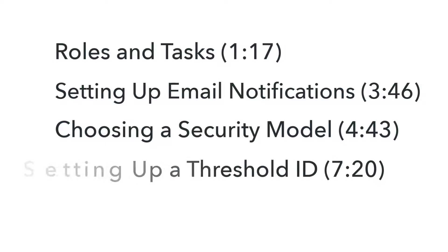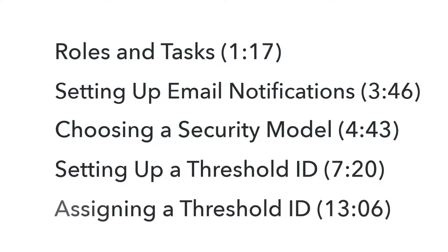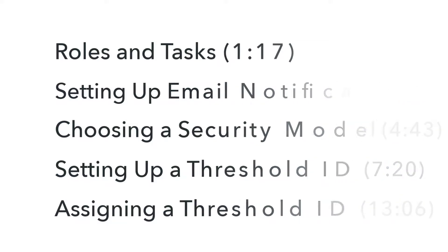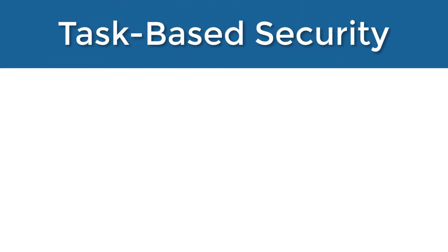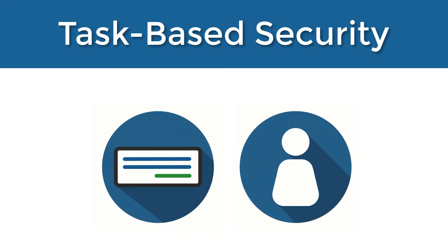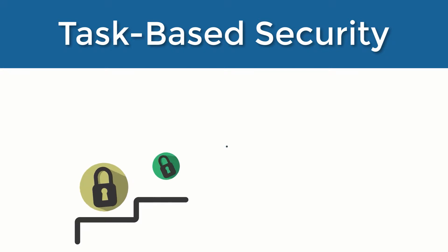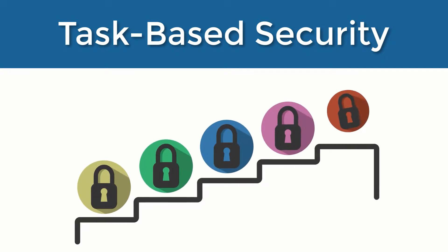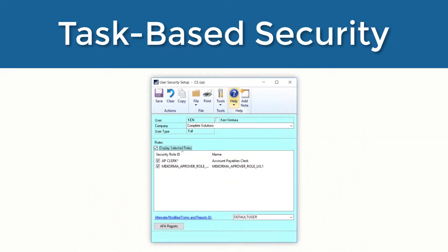This video also covers how to set up a threshold ID and how to assign a threshold ID to a checkbook. Task-based security brings together all functionality found in our checkbook and user ID based security options, giving you more flexibility across your companies and checkbooks. We now offer additional threshold levels and security options tied directly to each checkbook versus at the company level. Task-based security now utilizes Dynamics GP system security.